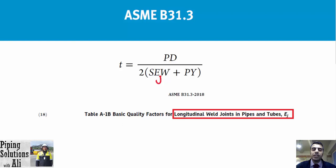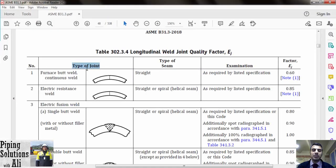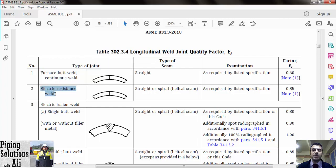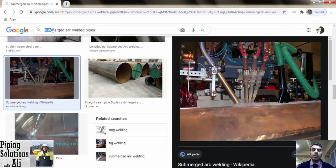This weakness is taken into account by the code by considering Ej, the longitudinal weld joint quality factor, in the denominator of the wall thickness calculation formula. There are different welding methods used to weld the pipe: furnace spot weld, continuous weld, electric resistant weld, and electric fusion weld, which includes shield metal arc welding (SMAW), MIG (metal inert gas), TIG (tungsten inert gas), and SAW (submerged arc welding).